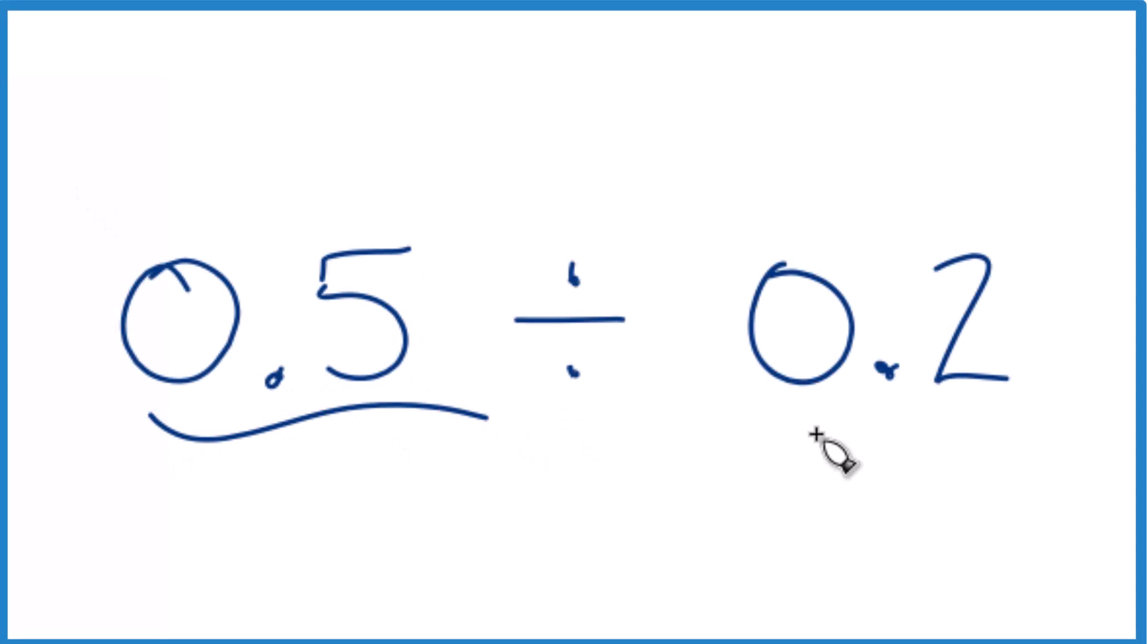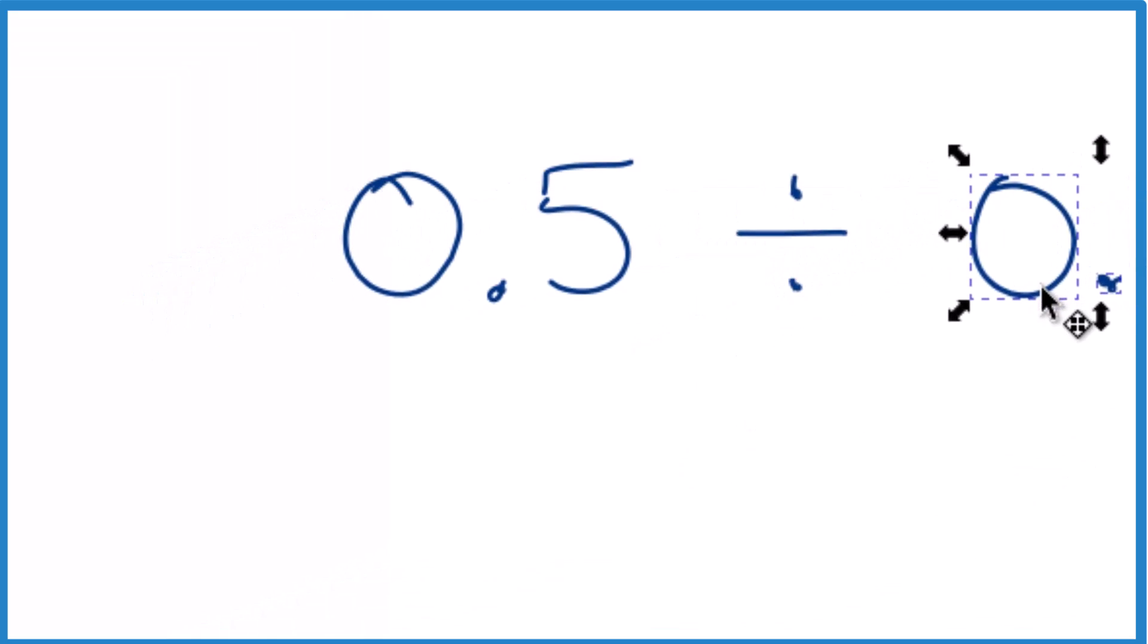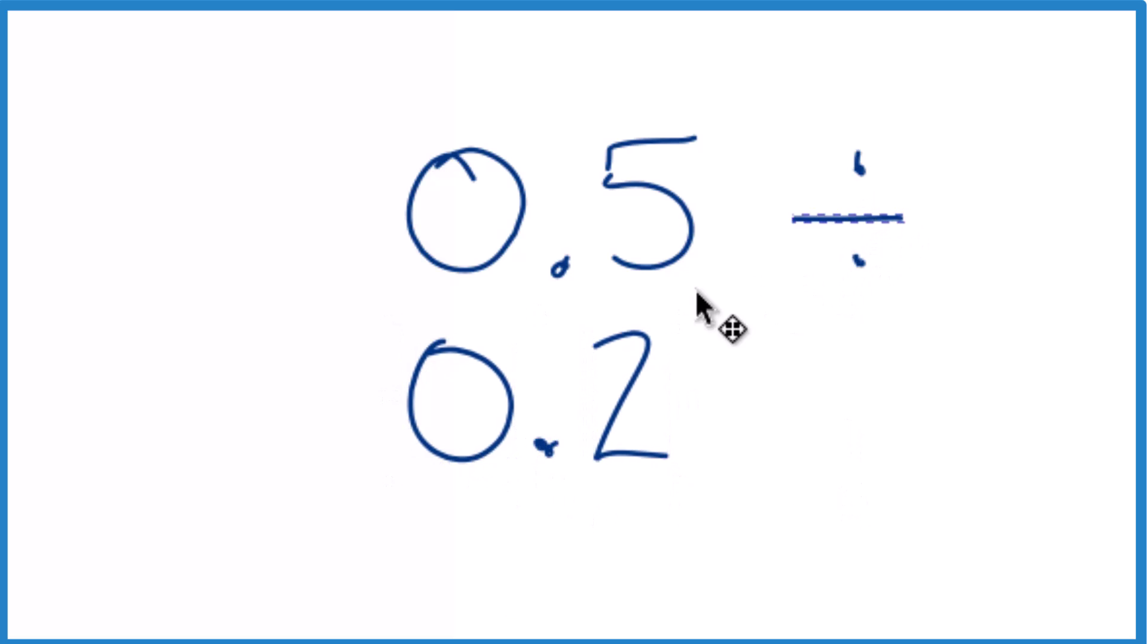If you need to divide 0.5 by 0.2, so we have the decimal 0.5 and we want to divide it by 0.2, here's how you can do that. It's helpful to think of it this way as 0.5 over 0.2.